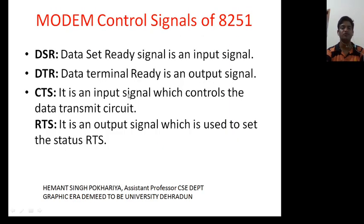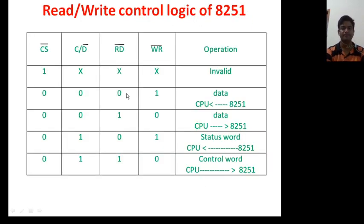Zero means write operation. Zero means read operation. So, data from 8251 is transmitted to CPU. Read means data is coming into CPU. Write means data is going out from CPU.